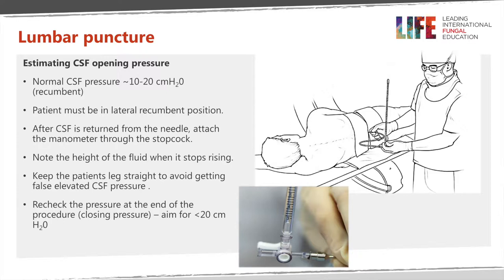Measuring CSF opening pressure is a very critical component of managing patients with raised intracranial pressure caused by cryptococcal meningitis. The normal CSF pressure is usually between 10 and 20 centimetres of water — anything above 20, and certainly above 25, would be considered abnormal. It's very important to measure the opening pressure when the patient is in a lateral recumbent position, as having the patient sitting up does not give a reliable measurement. The height of the fluid must only be measured when it stops rising up the tube; it's important to wait until this is completely stopped to get a true opening pressure measurement.